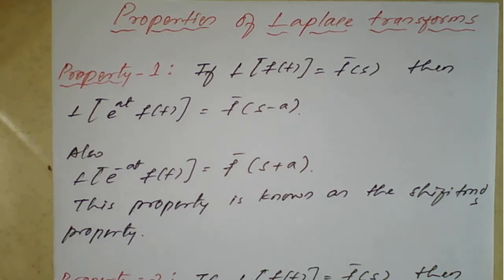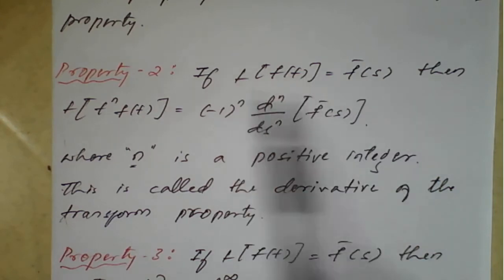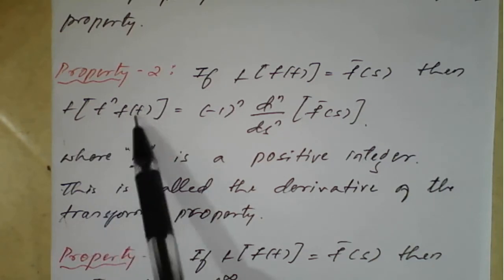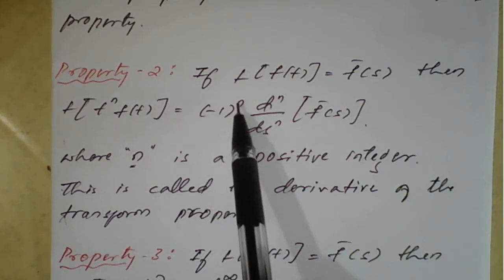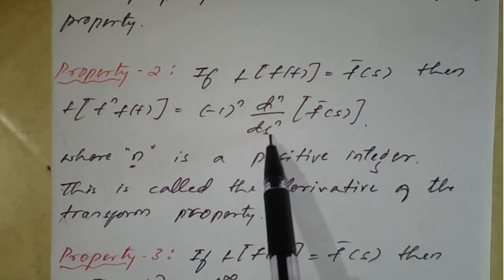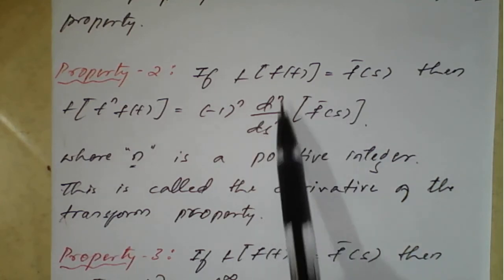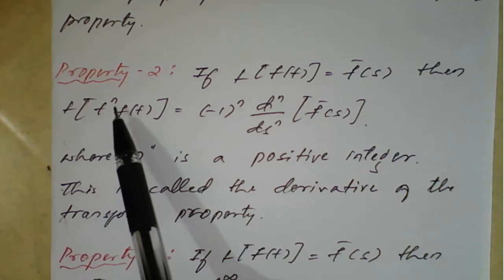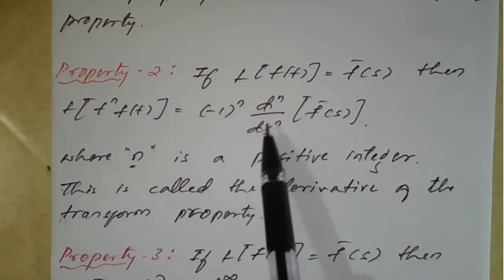The second property: if L{f(t)} = F(s), then the Laplace transform of t^n multiplied by f(t) can be written as (-1)^n times d^n/ds^n of F(s). This is a differentiation of F(s) with respect to s, n times. We call this the derivative of the transform. We will typically go up to t, t², or t³, meaning up to third differentiation at most.